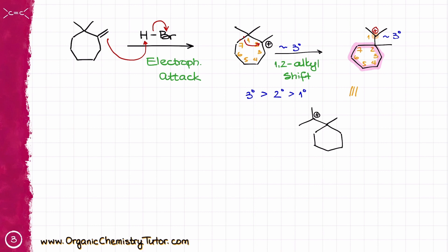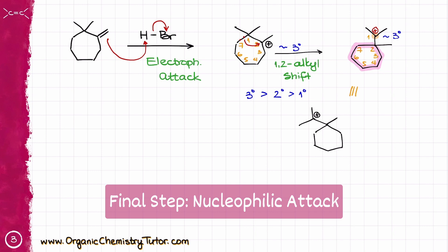This is the most stable carbocation that we can think about. The last step that we have in this reaction is going to be the nucleophilic attack from our Br-. Br- is going to come in, perform the nucleophilic attack on our carbocation, giving me the final product that looks like this.